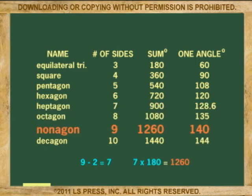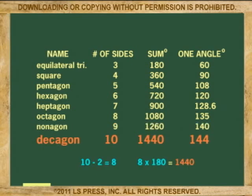After that, the nonagon: 9 minus 2 equals 7, and 7 times 180 equals 1260 degrees. And last is the decagon: 10 minus 2 equals 8, and 8 times 180 equals 1440 degrees.